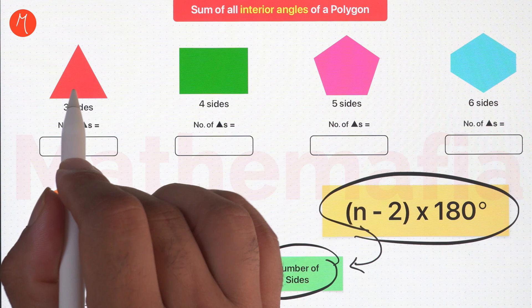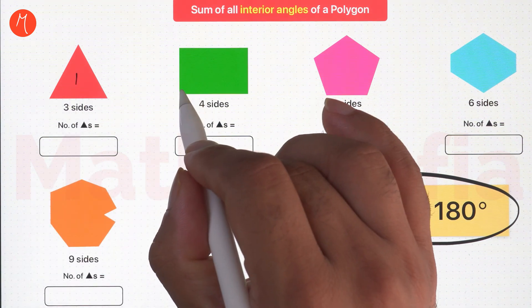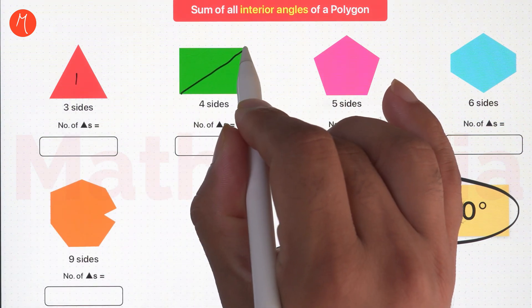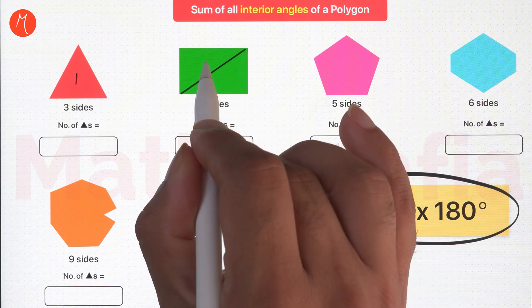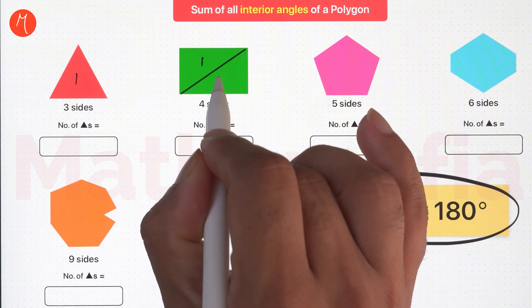The first polygon itself is a triangle. In this rectangle, if we join these two vertices, we will get two non-overlapping triangles.